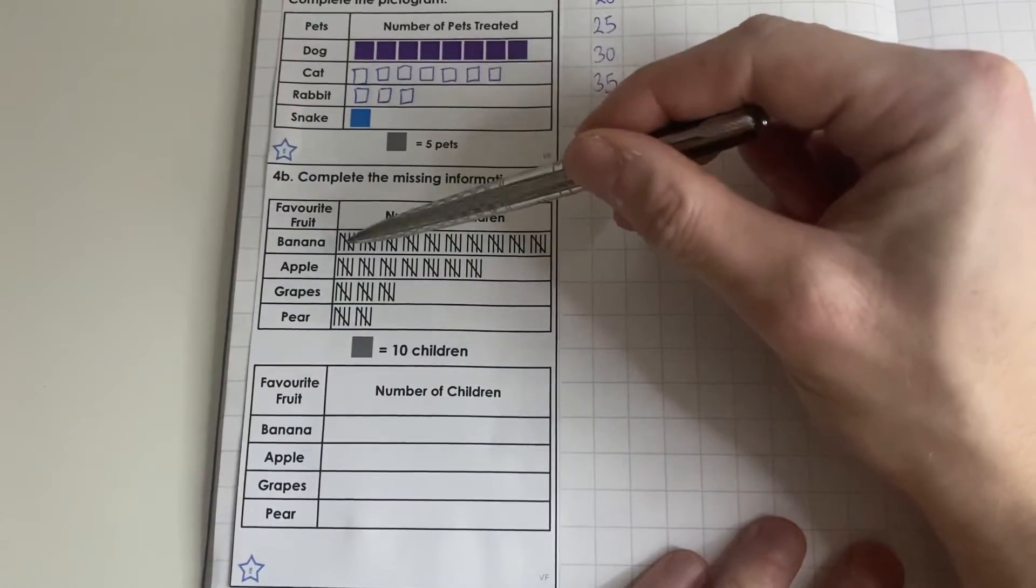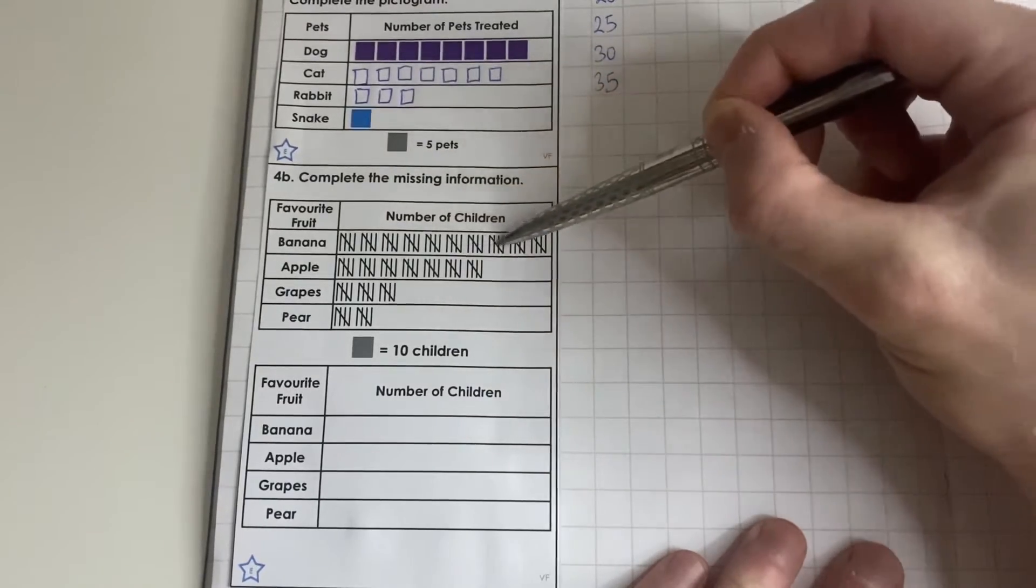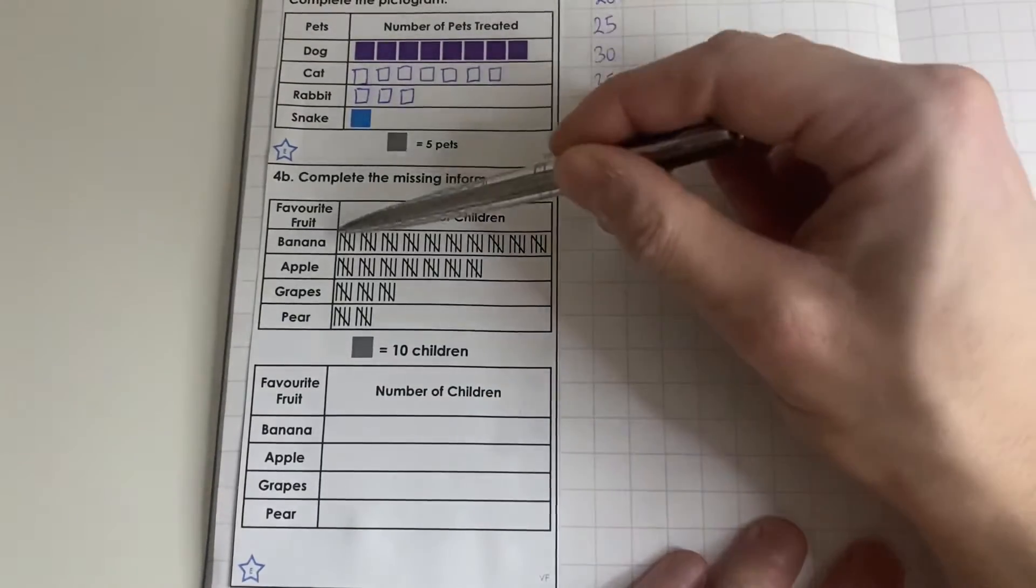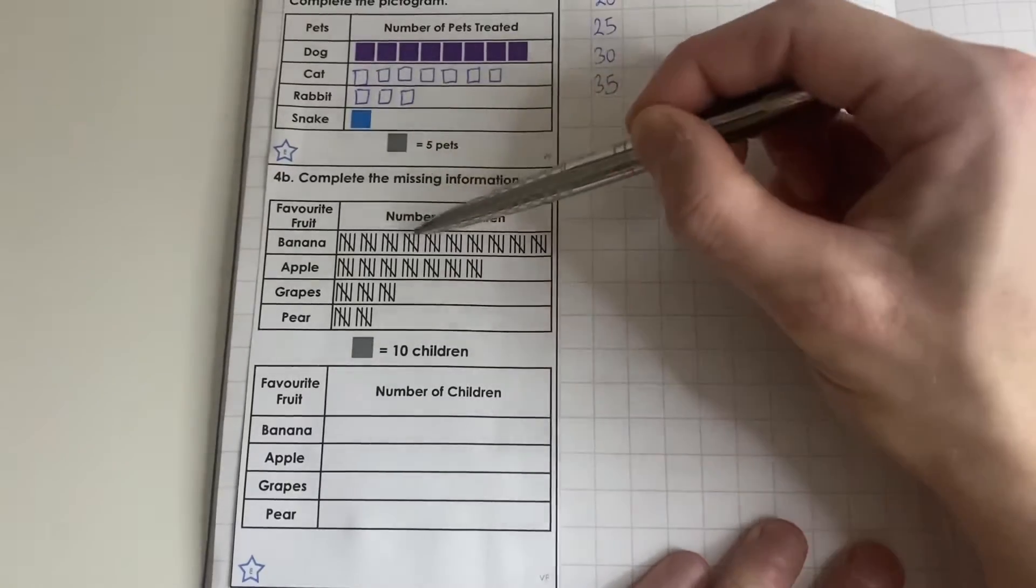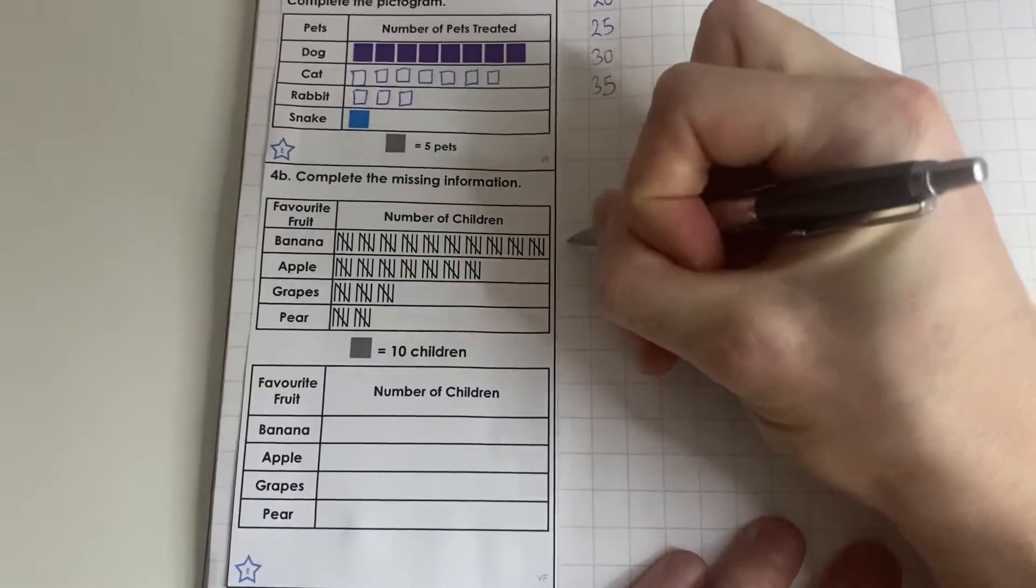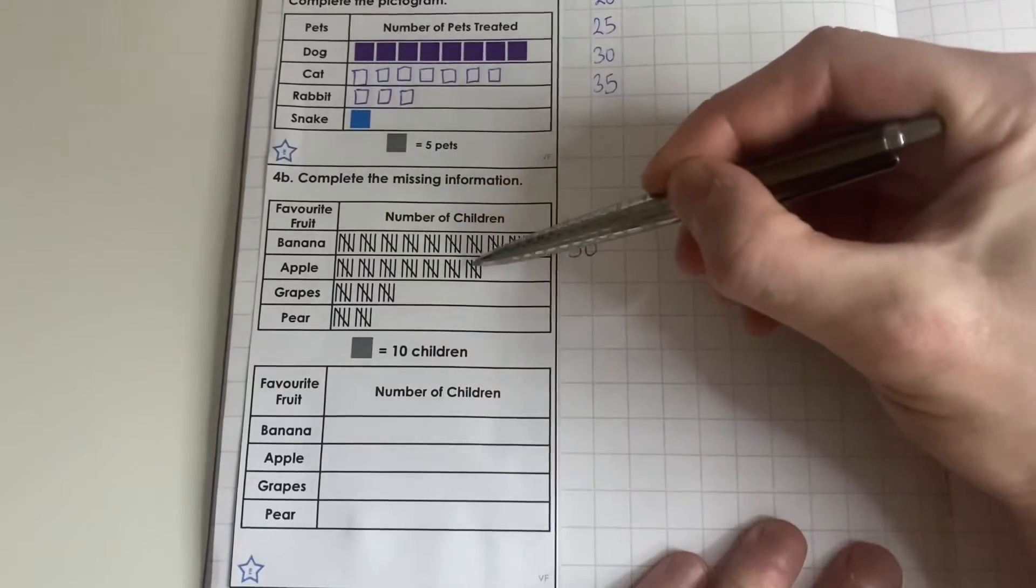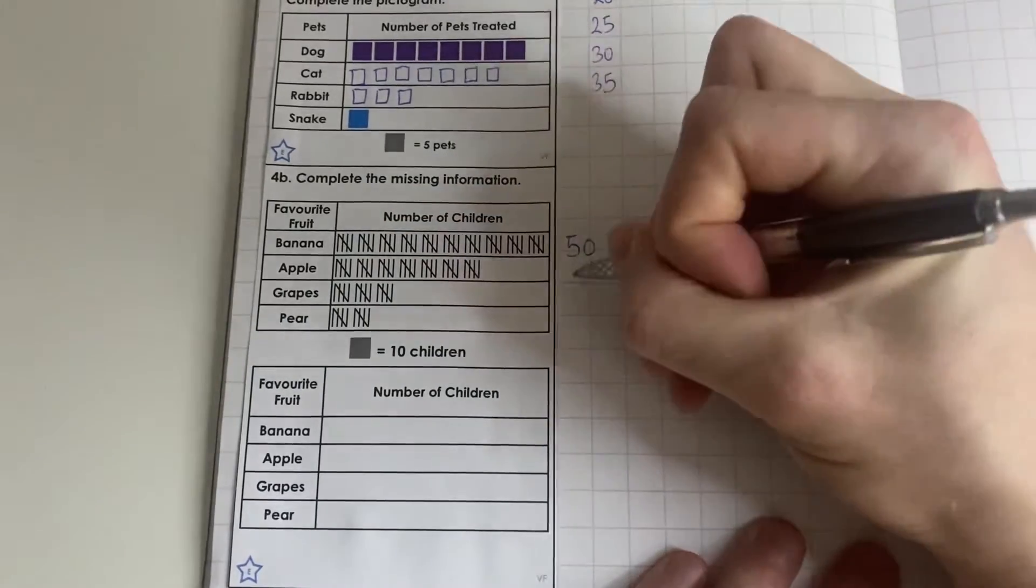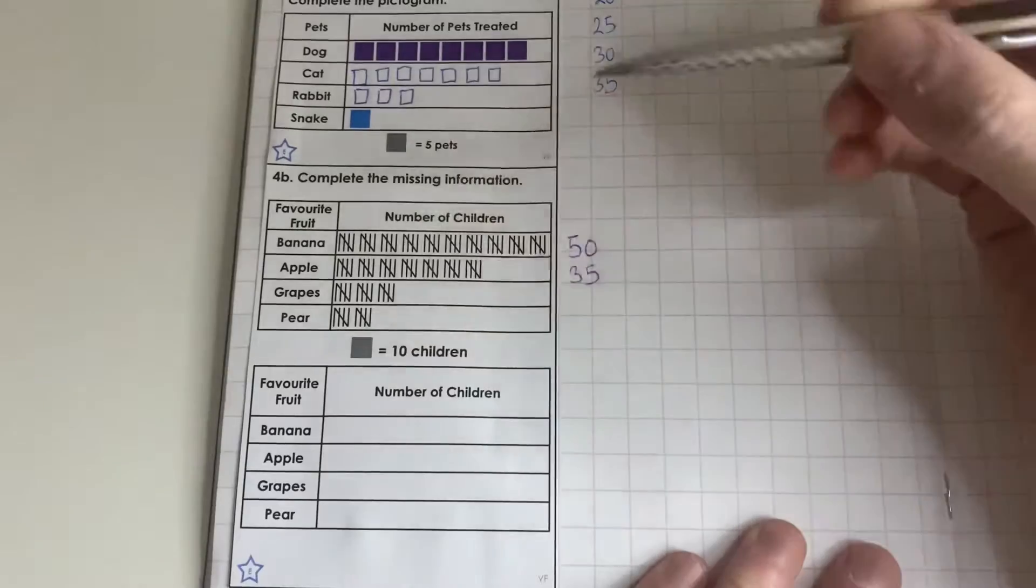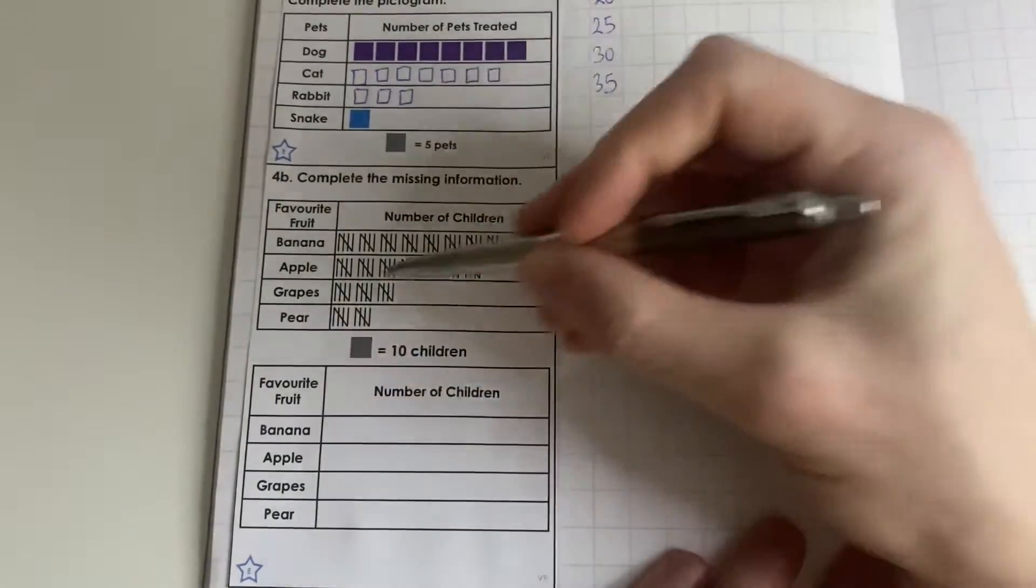We'll count these up. We've got 10 gates, so we're going to count them up in fives. Remember each one is worth 5. Banana: 5, 10, 15, 20, 25, 30, 35, 40, 45, 50. So we've got 50 there. Apple: 5, 10, 15, 20, 25, 30, 35. Grapes: 5, 10, 15. And pear: 5 and 10.